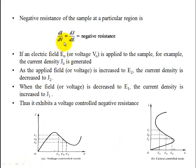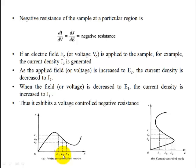Negative resistance is equal to dI/dV, or equivalently written as dJ/dE. We will use dJ/dE to represent negative resistance. To explain the J-E graph: we apply electric field E₀, and correspondingly current density J₀ is generated.